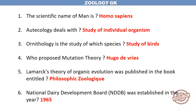The scientific name of man is Homo sapiens. Autecology deals with the study of an individual organism. Ornithology is the study of birds. Who proposed the mutation theory? Hugo De Vries.